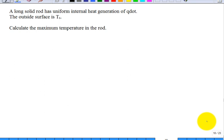So a student asked me to solve this problem, and let me just read it to you. We have a long, solid rod that has uniform internal heat generation, Q dot, and that will be in watts per meter cubed, SI units, for that heat generation.